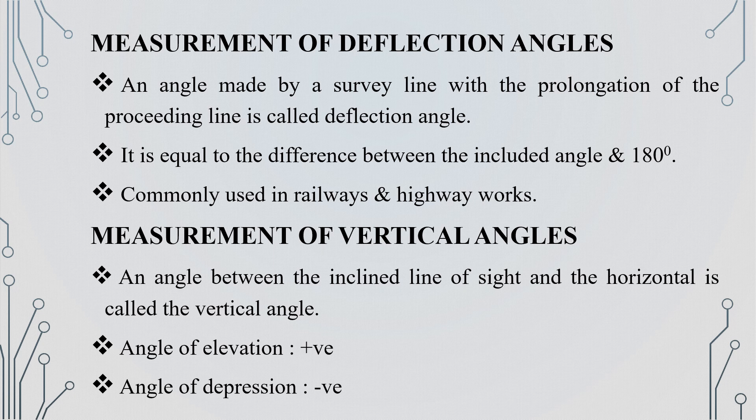The Deflection Angle is an angle made by a survey line with the prolongation of the preceding line. The value of a deflection angle varies from 0 degrees to 180 degrees.